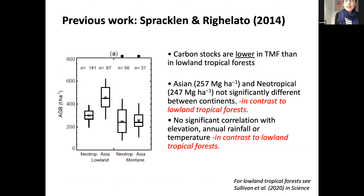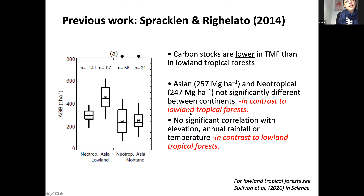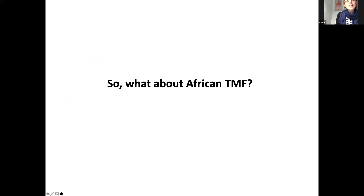A 2014 review by Sprague and Regalado assembled plots from different sources and found that in both the Neotropics and Southeast Asia there was more carbon in the lowlands than in mountain forest. The average was about 150 megagrams of biomass per hectare, with no significant difference between those two continents. They found no correlation with elevation, annual rainfall, or temperature.